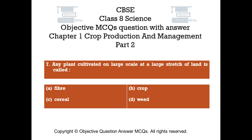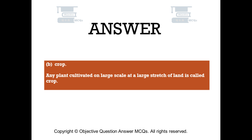Question number 7. Any plant cultivated on large scale at a large stretch of land is called. Option A: Fiber. Option B: Crop. Option C: Cereal. Option D: Weed. The right answer is Option B, Crop. Any plant cultivated on large scale at a large stretch of land is called crop.